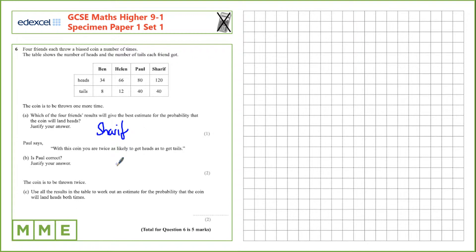Paul says that with this coin you are twice as likely to get heads as to get tails. Is Paul correct? Let's take all the information into account to find that out.